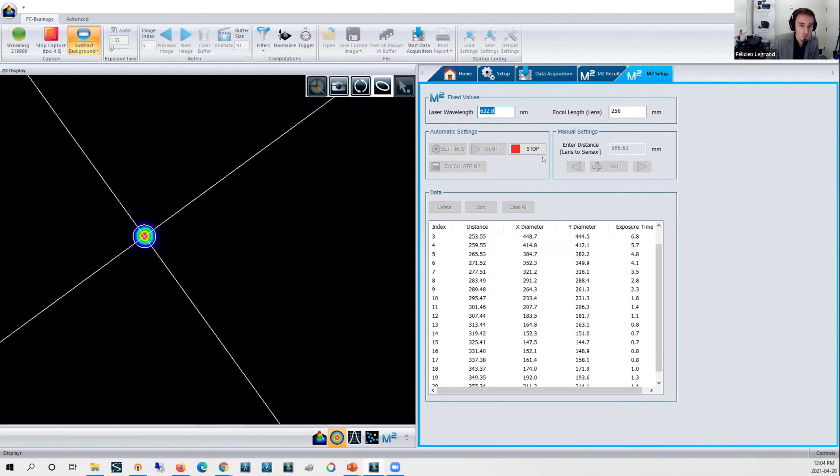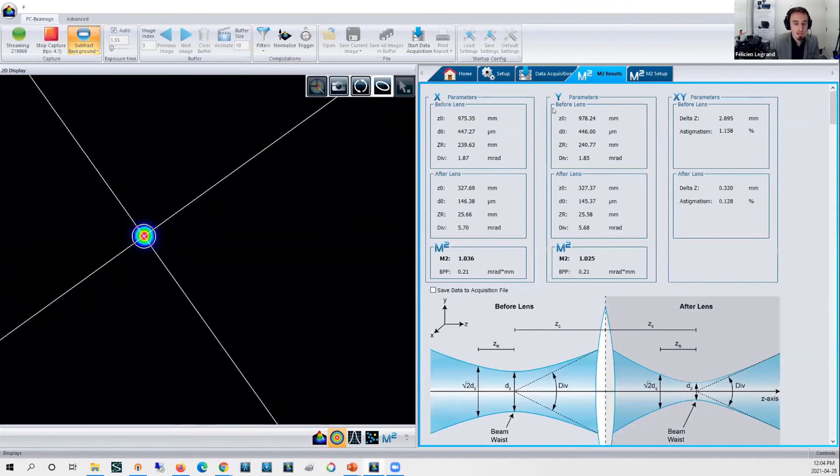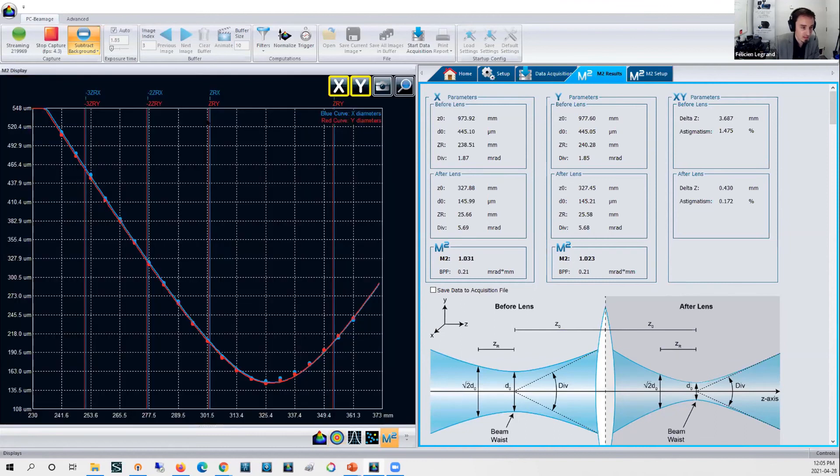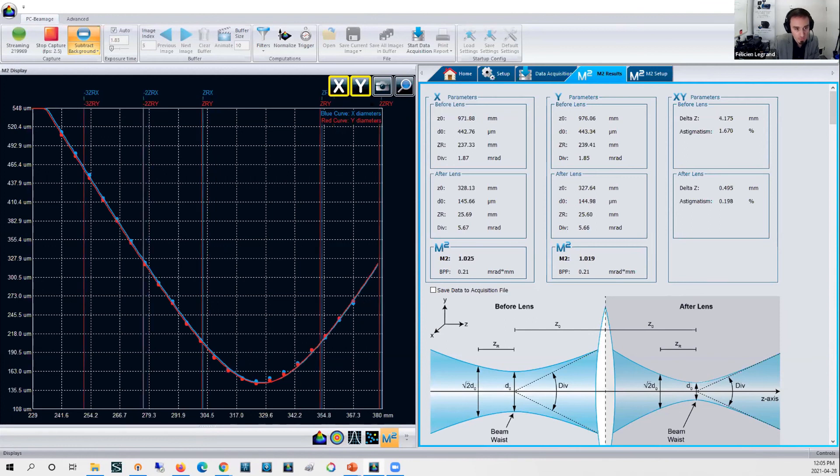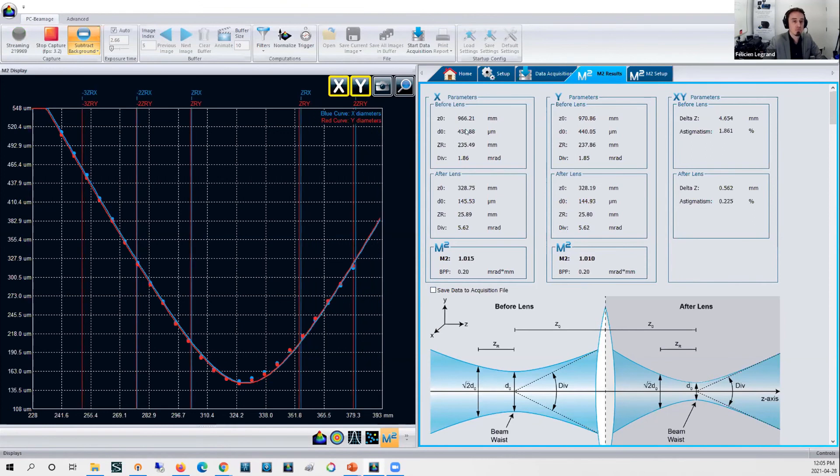I'm still running my measurements here. I'm about at 20 points, I need 30. But what you can see already here in the M² results window, what you get. This is dynamically calculating the M² value, but we will want to have more points than that. See the Rayleigh range here between minus three that will go to plus three Rayleigh range. We'll have a good measurement of beam diameters. This is compiling, calculating dynamically.